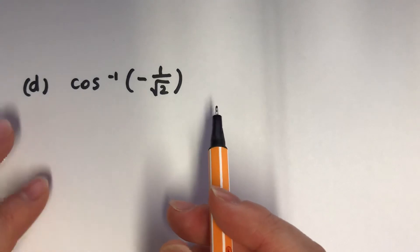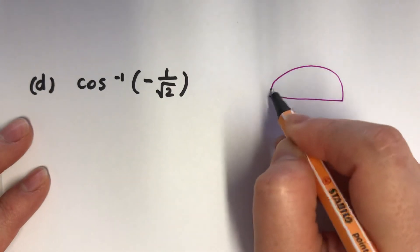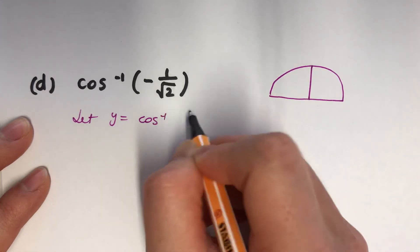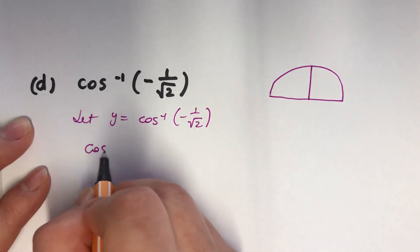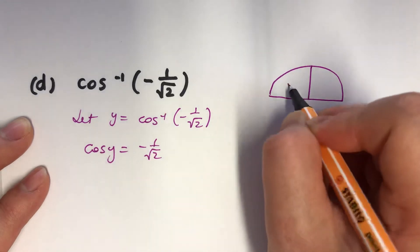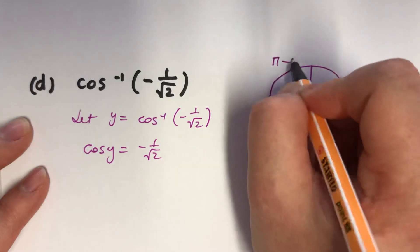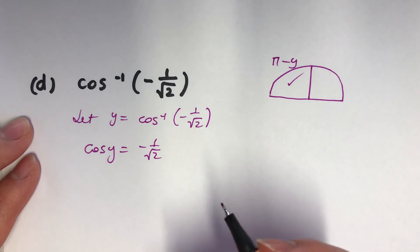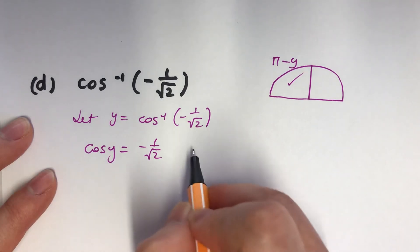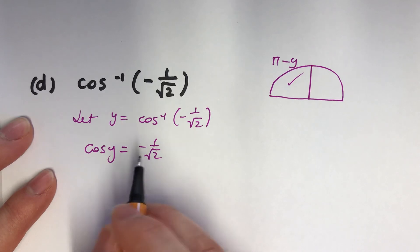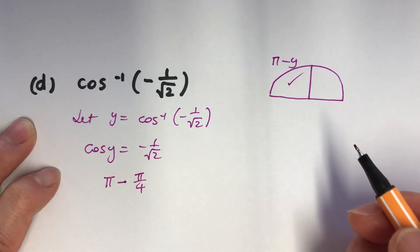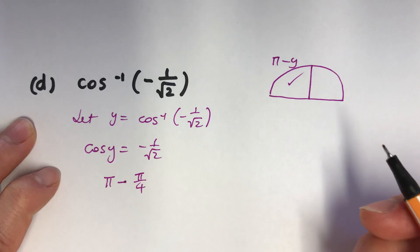Next one. Let y equals cos minus 1 of 1 over root 2, which will be cos y equals negative 1 over root 2. Again, it's negative, so it's 2nd. And also, it'll be pi minus y, because it's 2nd quadrant. So, what's happening now will be y will be pi over 4. So, pi minus y will be pi over 4, because which angle will have cos something equals 1 over root 2? Just pi over 4.